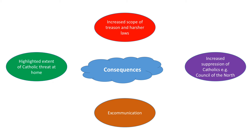Third, increased suppression of Catholics through measures like the Council of the North. The Council of the North is set up in 1572 by the Earl of Huntington, a very strict Protestant, to make sure Elizabeth's laws were being upheld. Since the north was far from London and more Catholic, the Council acted as a focal point for law enforcement. It also had special powers to take action against lawlessness and emergencies, meaning the Earl of Huntington could suppress any future rebellions without the delays the Earl of Sussex had experienced.